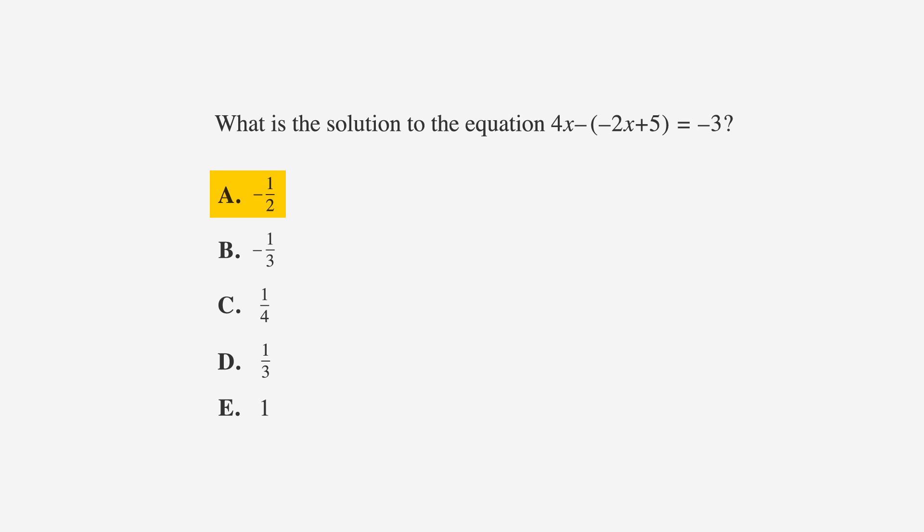A is negative 1 half, B is negative 1 third, C is 1 fourth, D is 1 third, and E is 1.